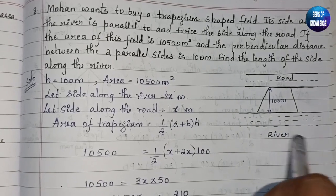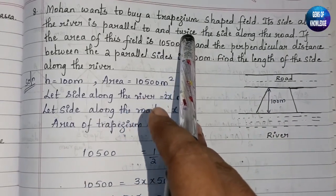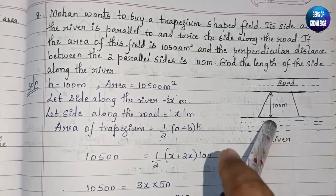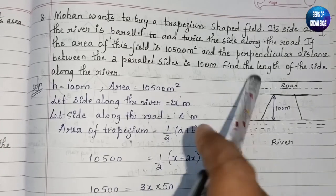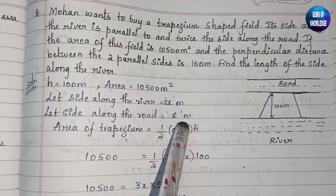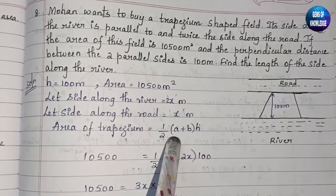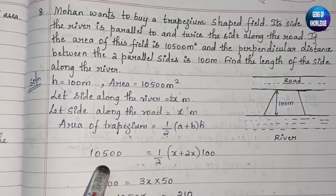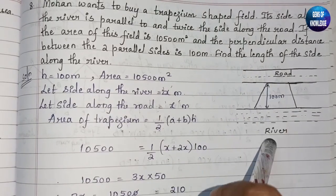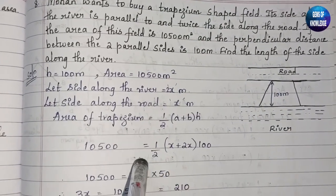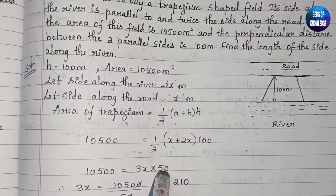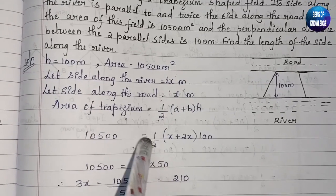Let side along the road be x meters. Since the river side is twice the road side, the side along the river is 2x meters. The formula for area of a trapezium is: half into (a + b) into height. Substituting: 10,500 = half into (x + 2x) into 100. Cancelling 2 and 100 gives 50, so we have (x + 2x) into 50 = 10,500.